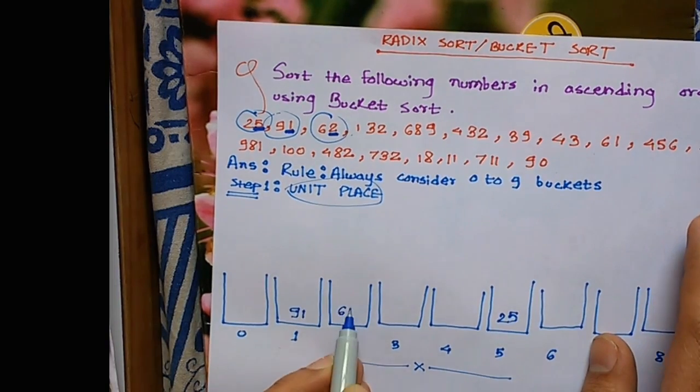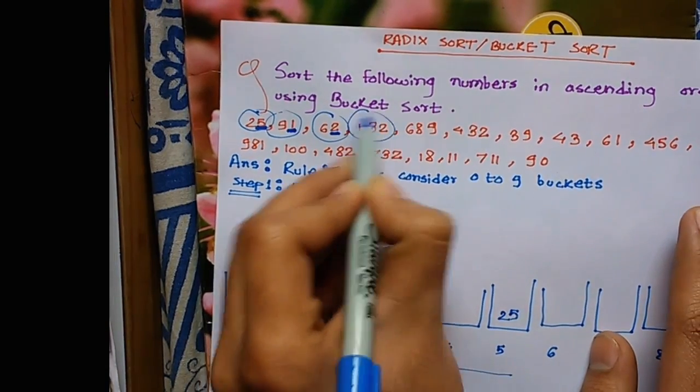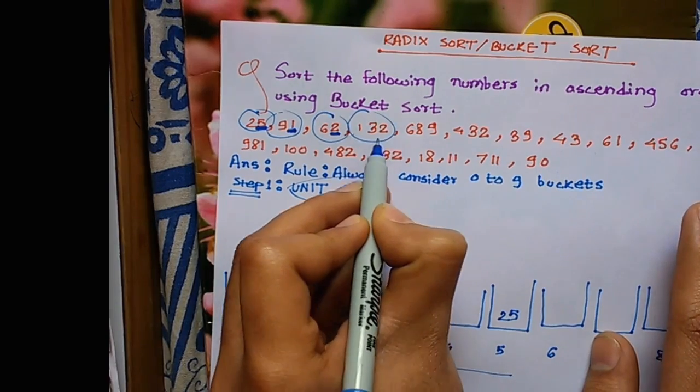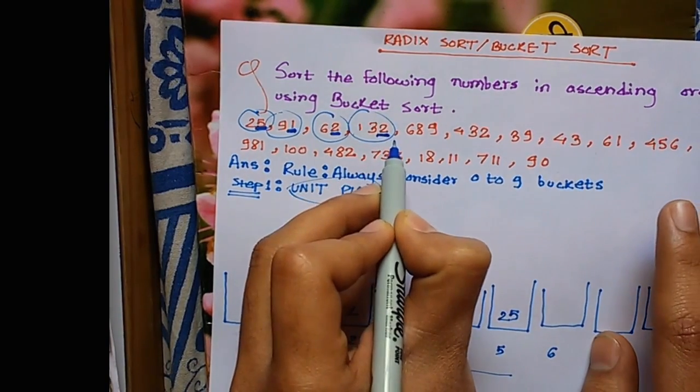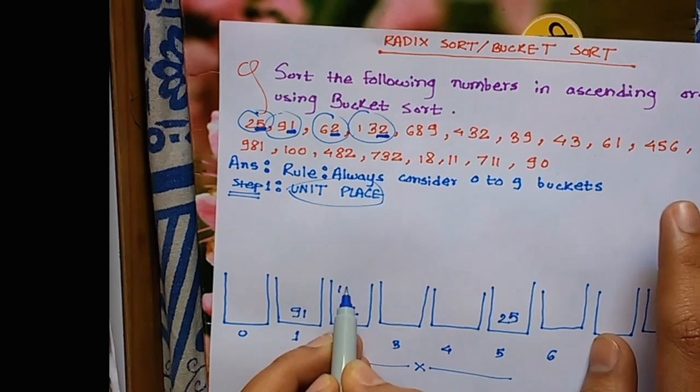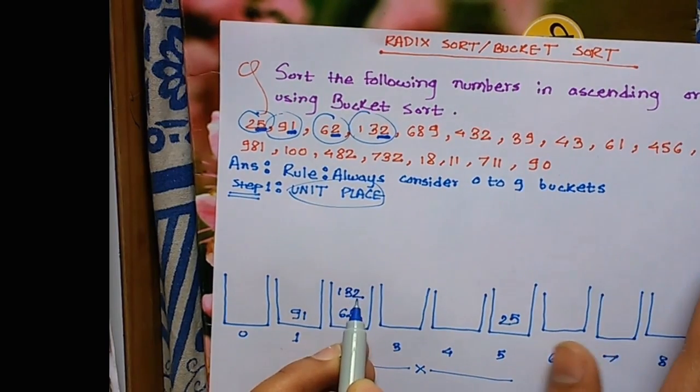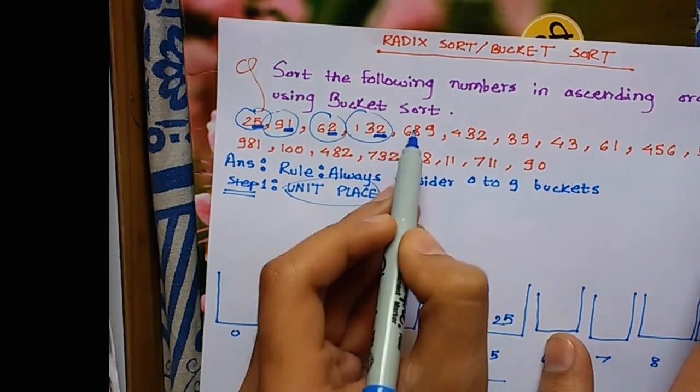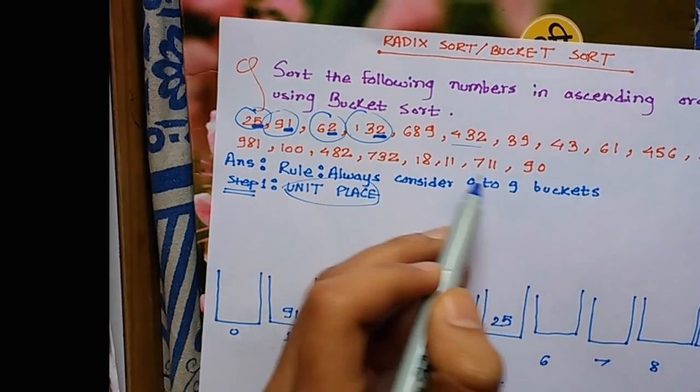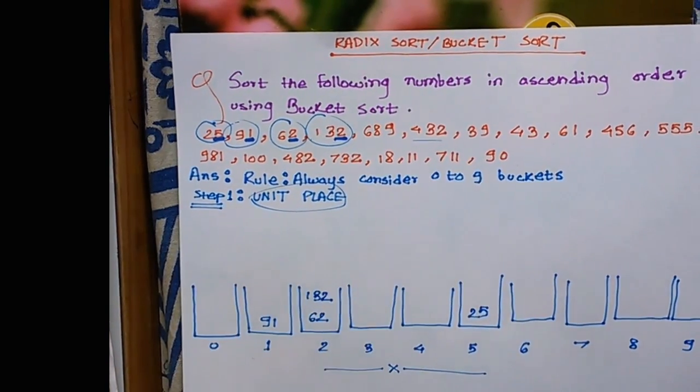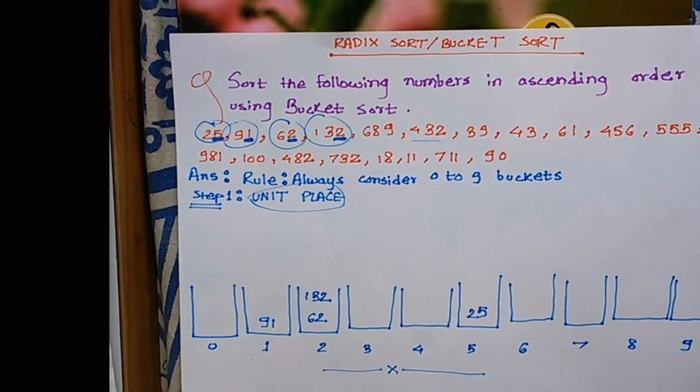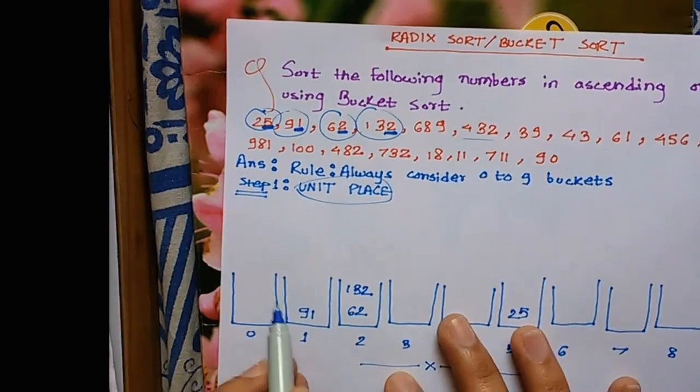Like this, consider 132 - it has unit place 2, so 132 goes in bucket 2. We have to sort each element from this list of numbers using bucket sort or radix sort.